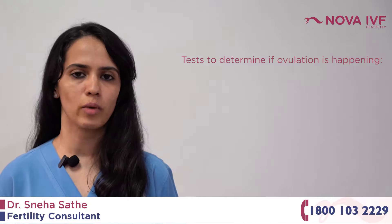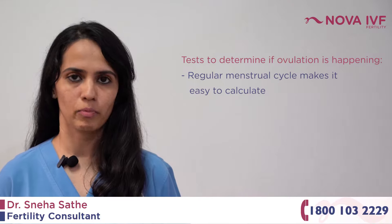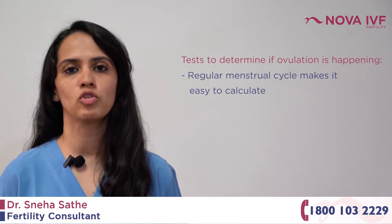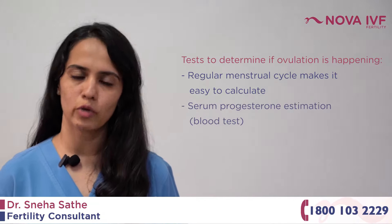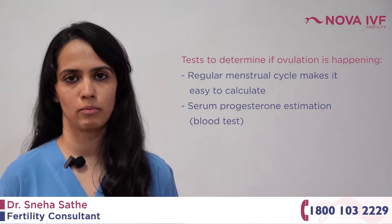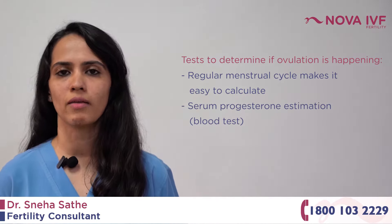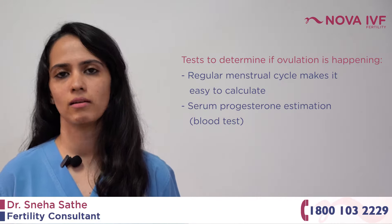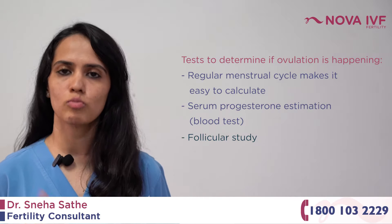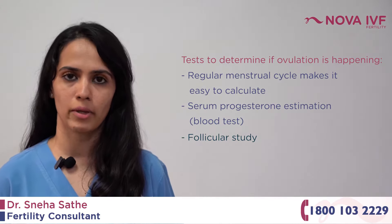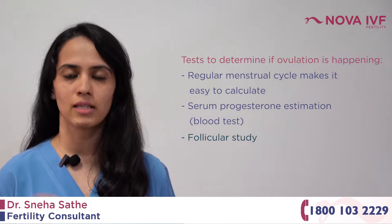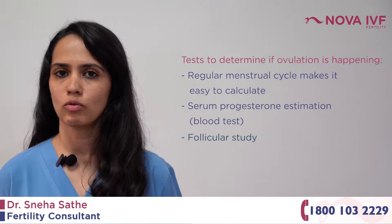How do you test for ovulation? The easiest way is if you have a regular menstrual cycle, but in spite of regular periods, if you have not conceived within a year of trying, it is better to objectively demonstrate that ovulation is happening. One way is a serum progesterone estimation — a blood test done about seven days before the onset of your next period to see whether the progesterone level is elevated. The most objective way is a follicular study, where the radiologist or gynecologist can see the follicle developing and eventually rupturing to release the egg.